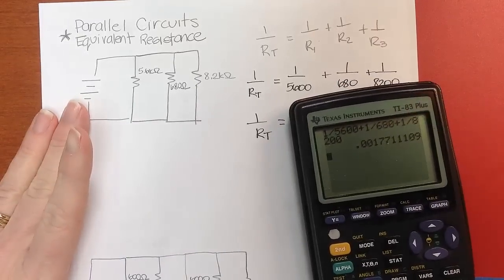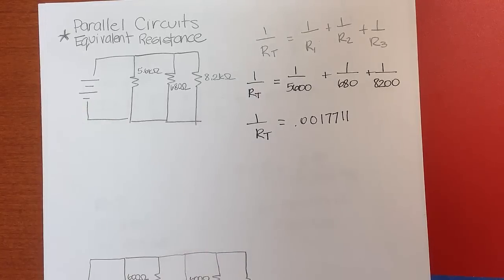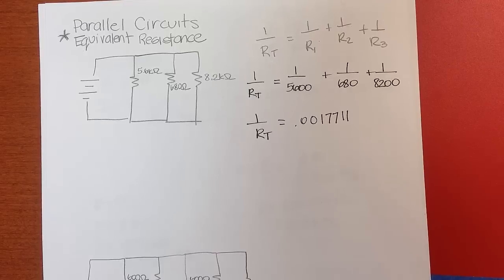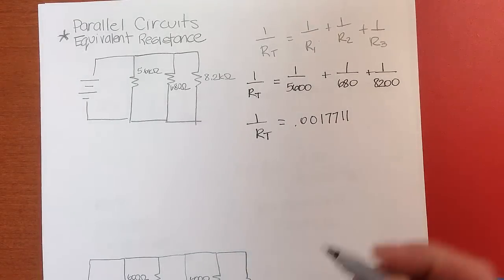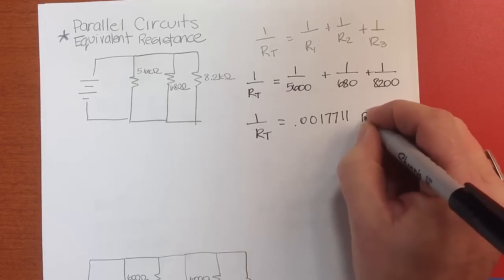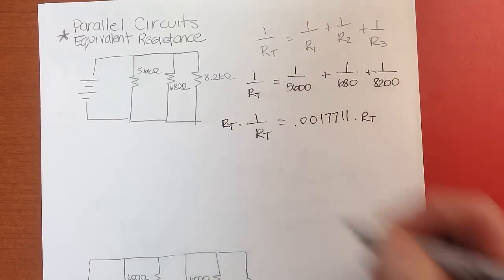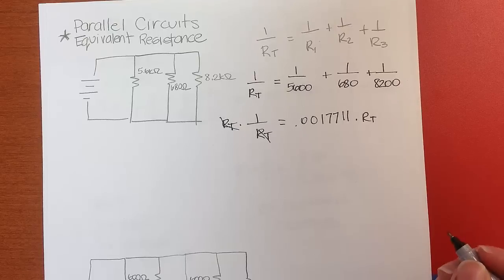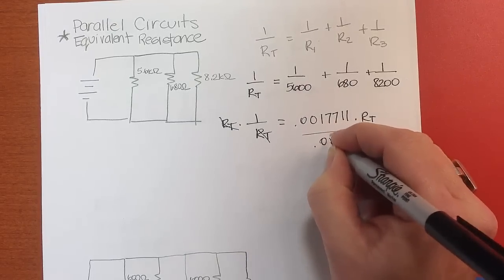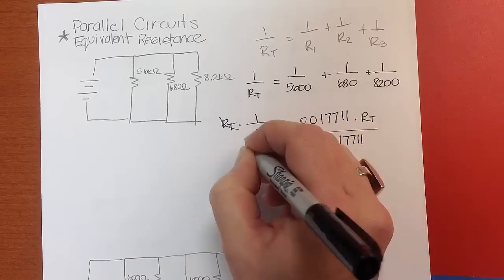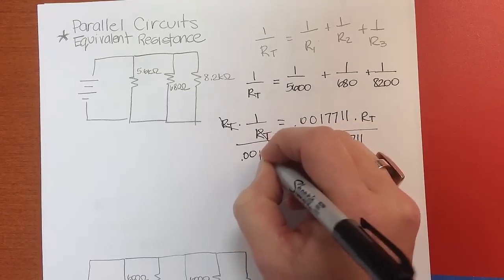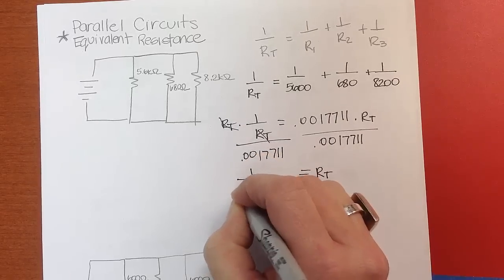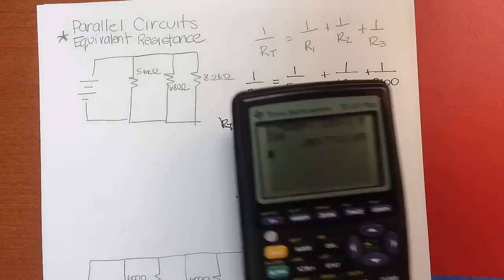You can think of this in a couple of ways: you can either cross multiply and divide, or think about the algebraic steps needed to get R_T on top. We multiply both sides by R_T — I can do anything to an equation as long as I do it to both sides — this cancels. Then to get R_T by itself, I divide both sides by that decimal.